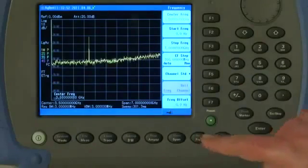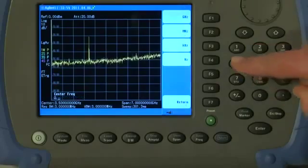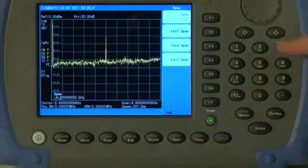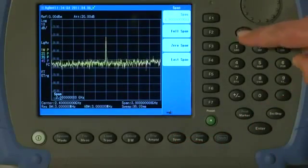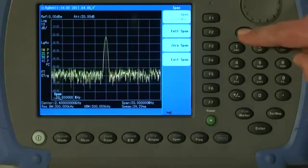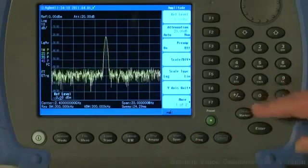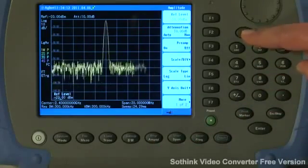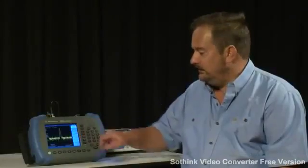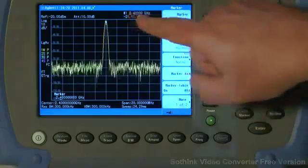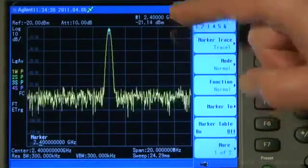If we know what frequency the signal is, we can simply press Frequency and enter, in this case, 2.4GHz. That tunes the signal to the center of the screen. I can then press the Span button and using the down arrow keys, I can zoom in on the signal. I can press the Amplitude button and change the reference level, again using the arrow keys to bring the signal to the top of the Graticule, and then I can press the Marker button and read the amplitude value of the signal, approximately minus 20 dBm.